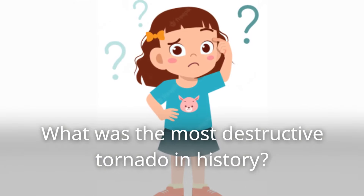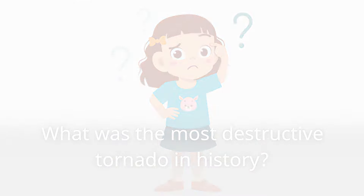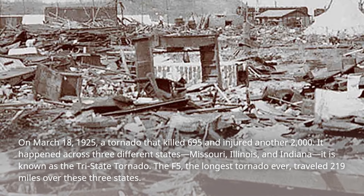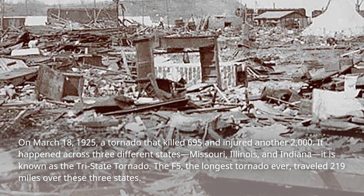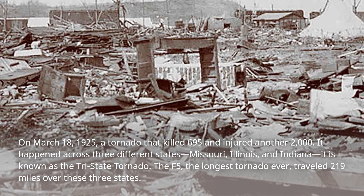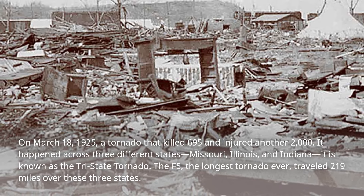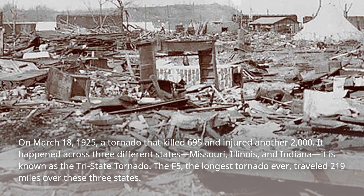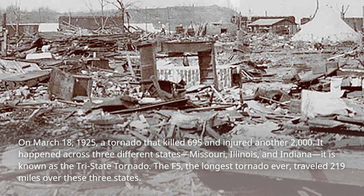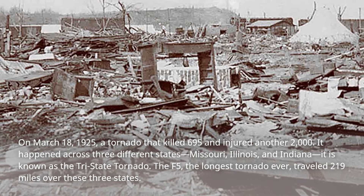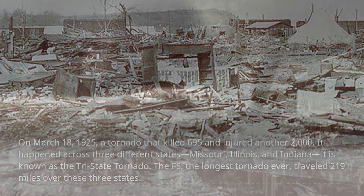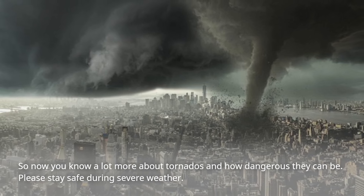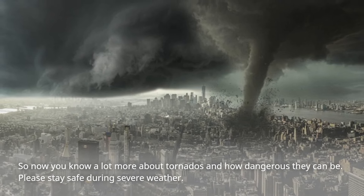What was the most destructive tornado in history? On March 18, 1925, a tornado killed 695 people and injured another 2,000. It happened across three different states: Missouri, Illinois, and Indiana. It is known as the Tri-State Tornado. The F5, the longest tornado ever, traveled 219 miles over these three states. So now you know a lot more about tornadoes and how dangerous they can be. Please stay safe during severe weather.